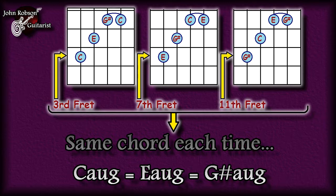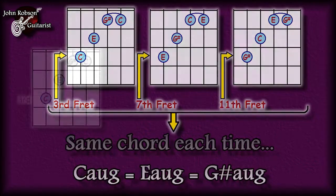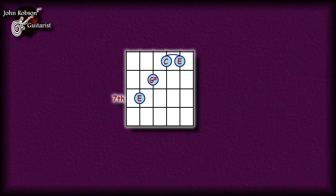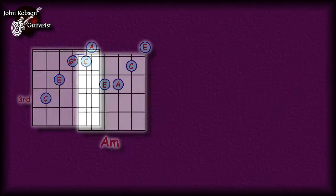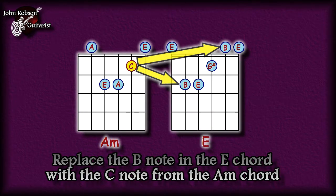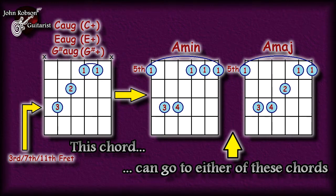Here's what it sounds like as I move this one chord shape up from the third fret to the seventh, to the eleventh, and back down again, finally resolving it to an A minor. It's also worth mentioning that this doesn't just work with minor chords — you can just as easily use a G sharp augmented to take you to an A major chord as well as an A minor.